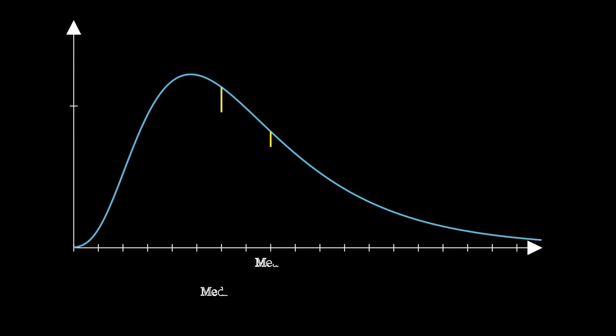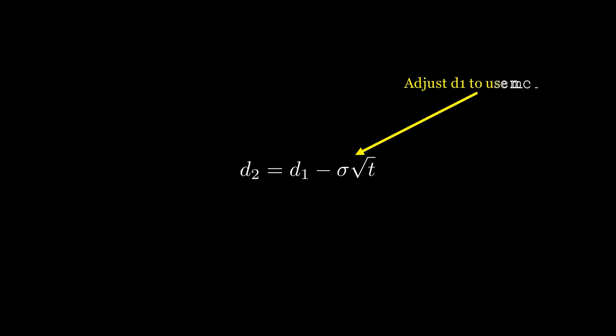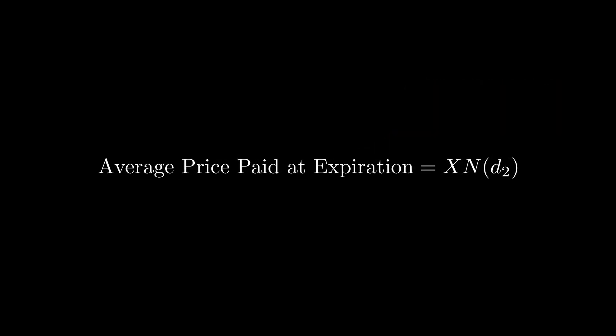To figure out the likelihood that an option will be exercised, we use the median of the log-normal distribution. This is the point that splits the total occurrences in half, and it usually falls to the left of the mean. The value N(D2) uses this median to estimate the probability of the option being in the money at expiration. Multiplying this probability by the exercise price gives us the average amount we'll pay if we own the option.